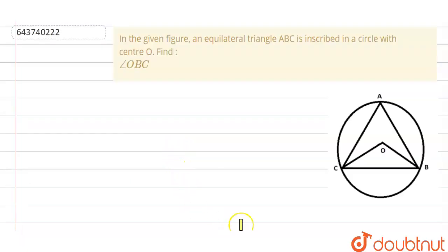Hello friends, today the question is: in the given figure, an equilateral triangle ABC inscribed in a circle with center O. We need to find the angle OBC, that is this angle. So let's start the solution.